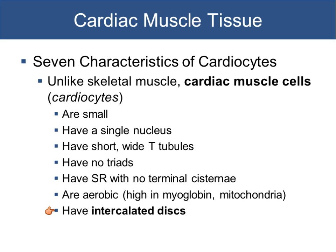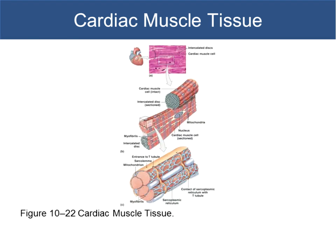The intercalated discs' role is to propagate the action potential from one cell to the next. In skeletal muscle cells, that job of propagating the action potential was the role of the T-tubules. In cardiac muscle cells, you get the heart to beat succinctly top-to-bottom, with all the cells at the top contracting at the same time and all the cells at the bottom contracting at the same time. In between each cardiac muscle cell are these intercalated discs, which are really just gap junctions that allow the signal — in the form of chemicals — to be transmitted very quickly from one cell to its neighbor.